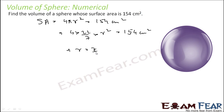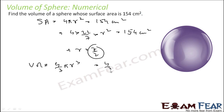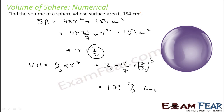So r comes out to be 7/2. Once we have r, we can easily find the volume. Volume of a sphere is 4/3 πr³. Putting in the values: 4/3 × 22/7 × (7/2)³, you get 179⅔ cm³. The surface area was in cm² and the volume is in cm³.